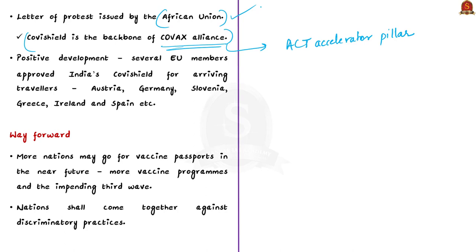After vocal protests from many countries including India, several EU member states — Austria, Germany, Slovenia, Greece, Ireland, and Spain — have individually approved Covishield for arriving travelers, and Estonia has accepted both Covishield and Covaxin. These steps significantly benefit Indian travelers. The author concludes that as more vaccine programs emerge and a third COVID-19 wave approaches, every nation adopting vaccine passport policies should recognize the vaccine programs of other countries to allow international travel without discriminatory practices.